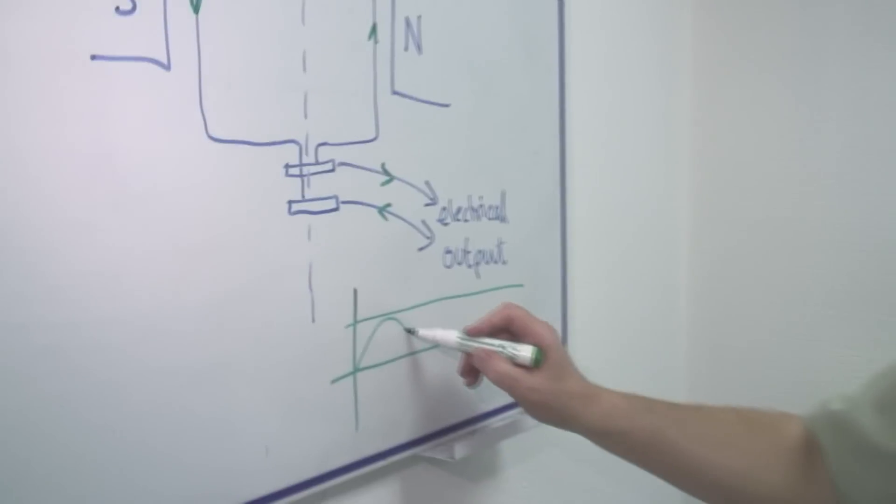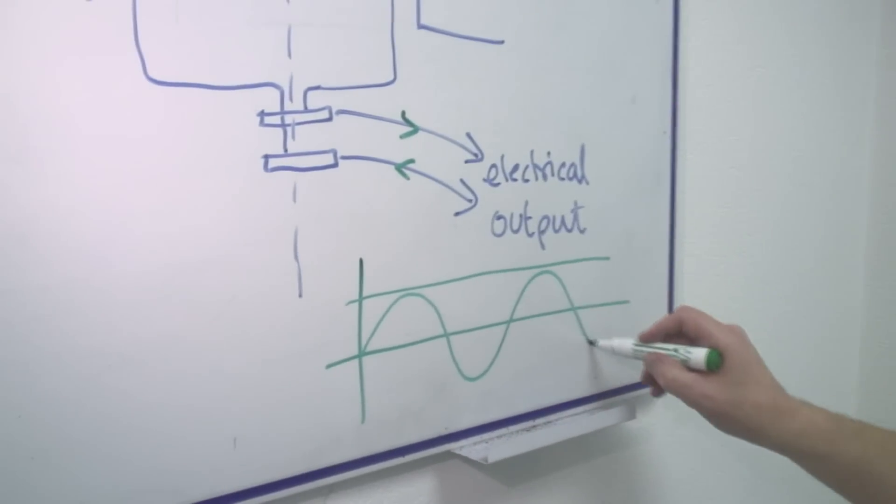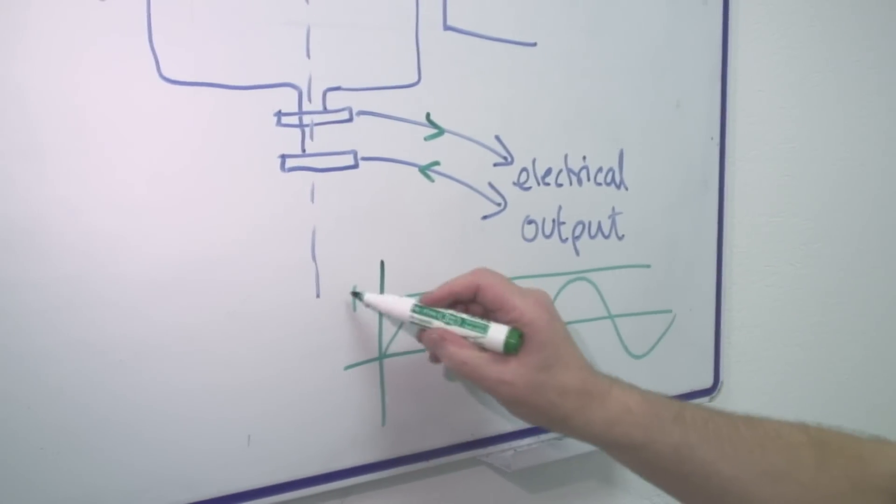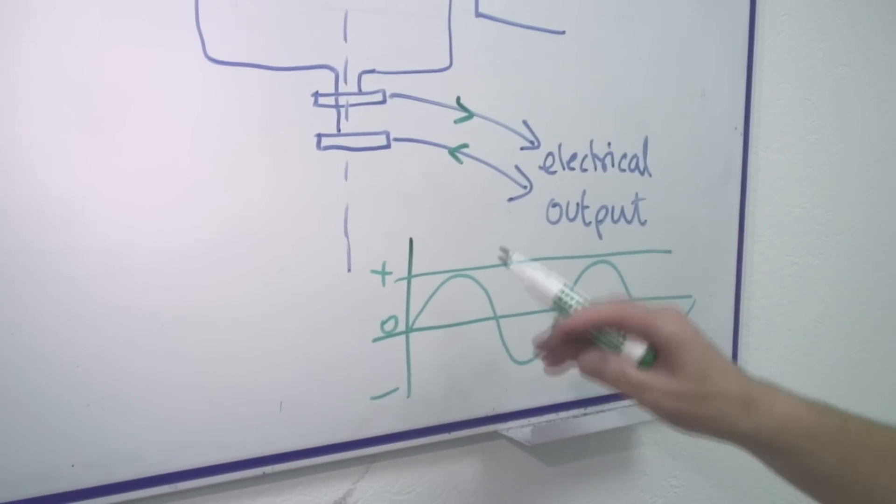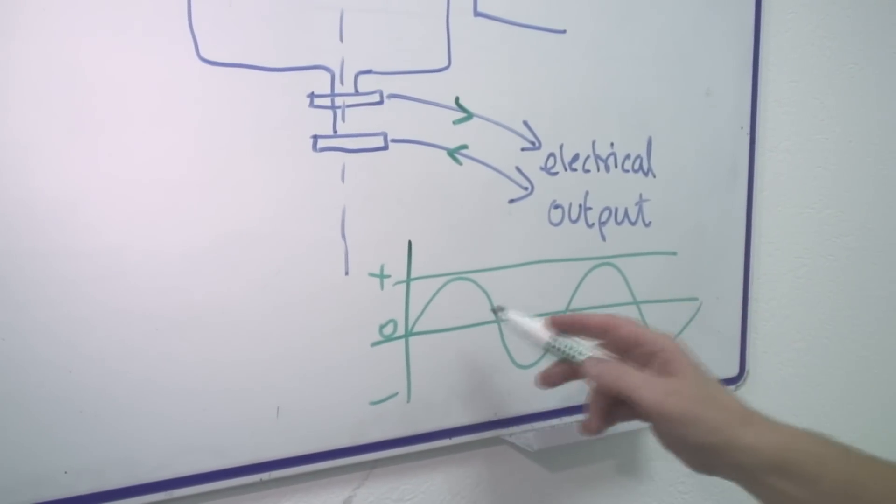It will actually look something like this, where it goes positive and negative from zero. So sometimes it goes forward, sometimes it goes backward. It's called alternating current.